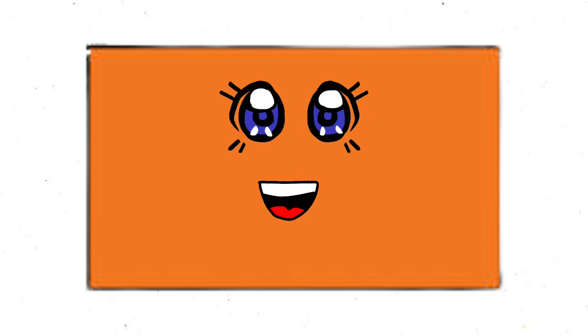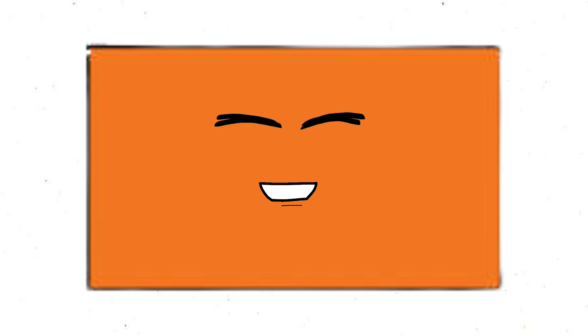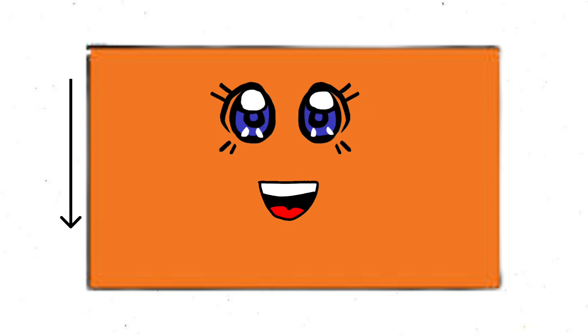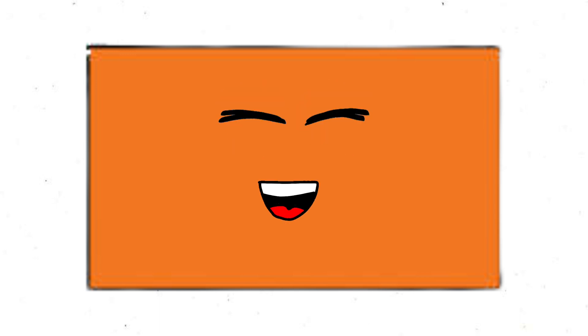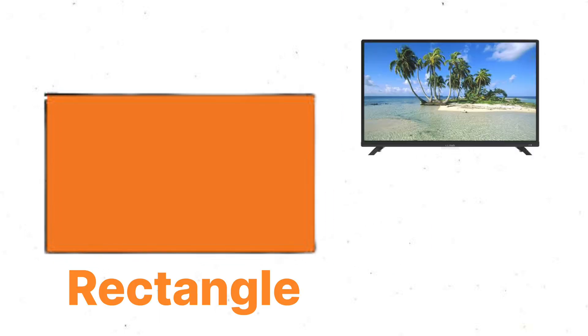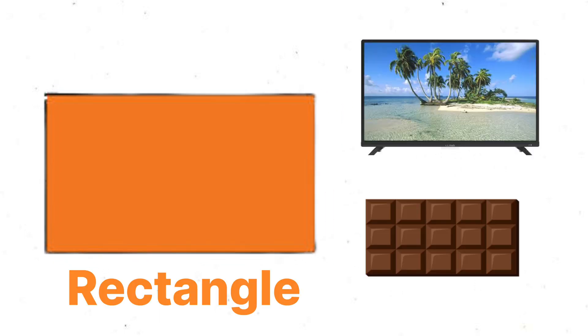I am Rectangle. I have four sides and my opposite sides are equal: one, two, three, four. The example of rectangle is TV and chocolate bar.